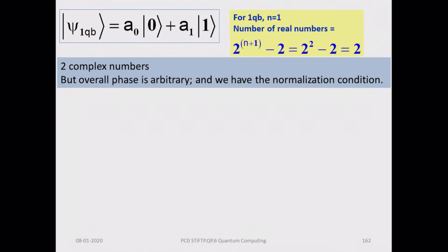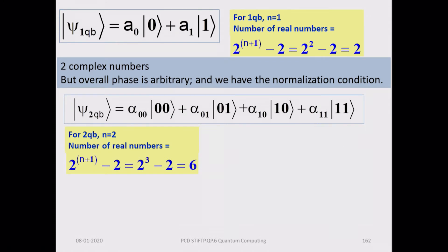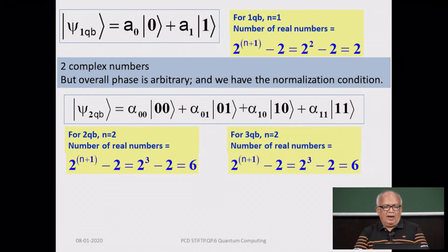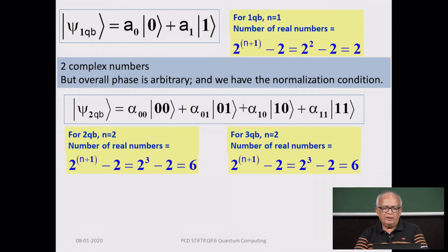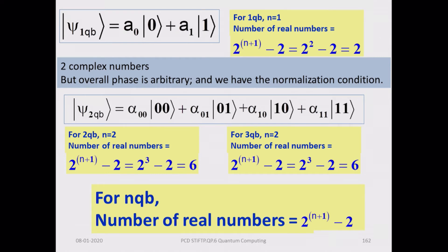The number of atoms in the universe is estimated to be somewhere between 2^264 and 2^272. As more qubits are entangled, your capacity to process quantum information becomes enormously large. This will have a major impact on technology — you can make quantum gates. Using single-qubit gates, two-qubit gates, and quantum circuits, you build quantum computers. A single-qubit state needs 2 real numbers to describe it; a two-qubit state needs 6; for n qubits, you need 2^(n+1) − 2 real numbers.